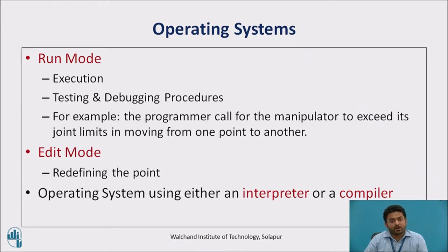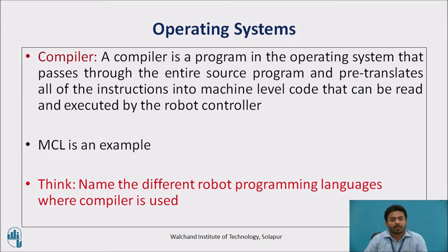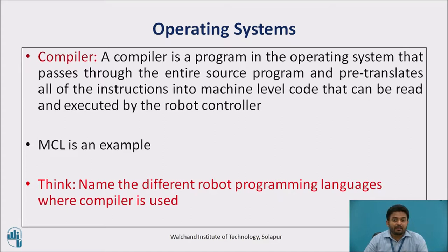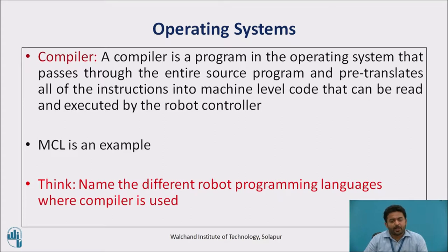A Robot Language Program is processed by the operating system using either an interpreter or a compiler. A compiler is a program in the operating system that passes through the entire source program and pre-translates all of the instructions into machine-level code that can be read and executed by the robot controller. MCL is an example of a robot language that is processed by a compiler. Pause the video and think: name the different robot programming languages where a compiler can be used.